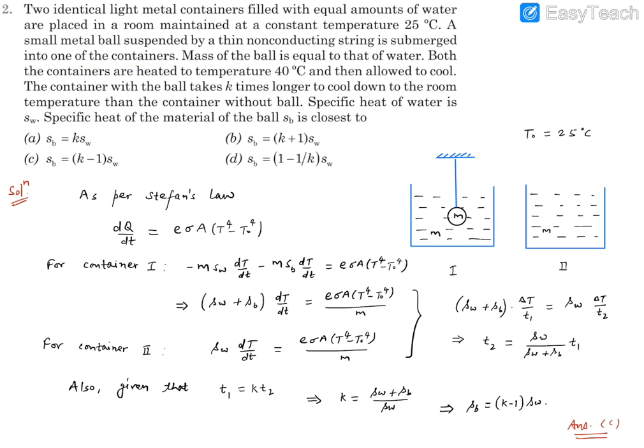The mass of the ball and the water is equal. Both containers are heated to the same temperature, 40 degrees Celsius, and then allowed to cool down. The container with the ball takes k times longer to cool down to room temperature compared to the other one, and we need to find out the specific heat capacity of the material of the ball.